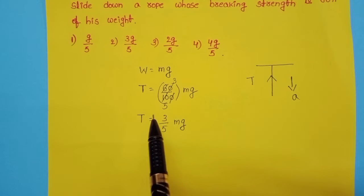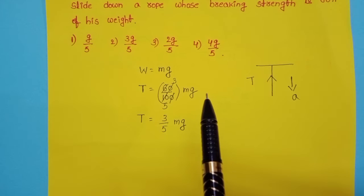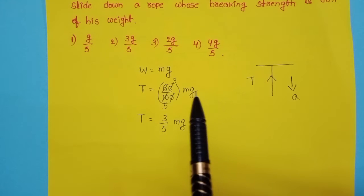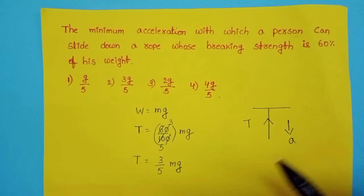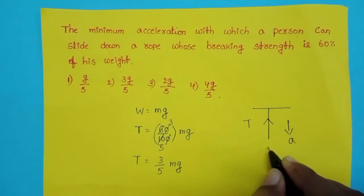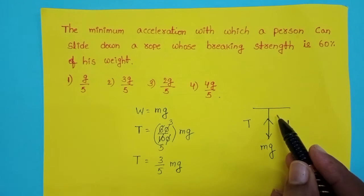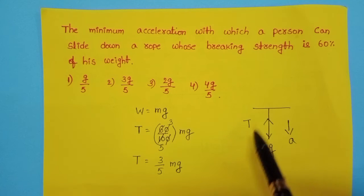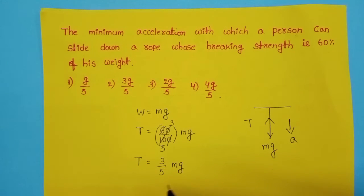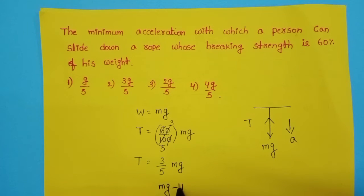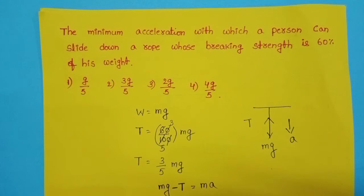Here we have to find out the minimum acceleration of the person with which he slides down. The weight of the person is acting in the downward direction, and the tensional force is acting in the upward direction. So from this diagram, mg acts downward and the strength of the string — that is, the tensional force — acts upward. The resultant force on the person is in the downward direction.